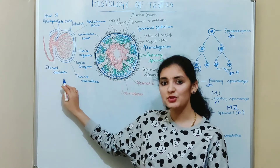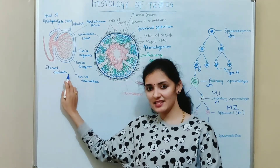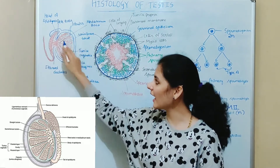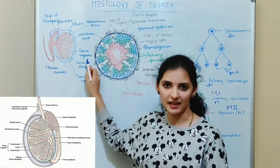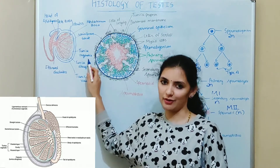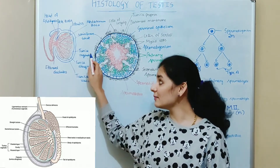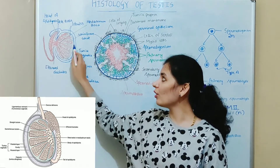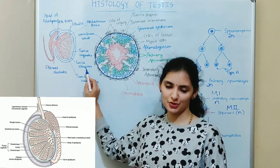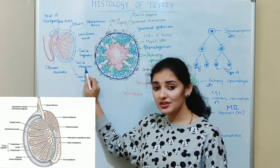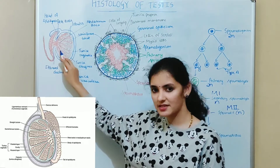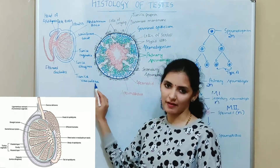This is a diagram showing the histology of testes. As you can see in this diagram, the testes is covered by a double layered sac called tunica vaginalis. This layer is the extended part of the visceral layer of peritoneum. Just below this tunica vaginalis, a layer of fibrous capsule is present called tunica albuginea. Below this tunica albuginea layer, a layer of connective tissue is present called tunica vasculosa.